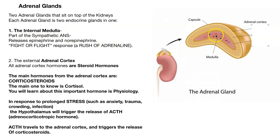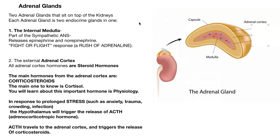The adrenal medulla is where the autonomic sympathetic nervous system goes in times of real stress and emergency. The sympathetic nervous system will release norepinephrine and epinephrine into the blood — these act like hormones. That norepinephrine and epinephrine goes throughout your whole body, triggering a rush of adrenaline. It's called adrenaline because it's coming from the adrenal gland, but basically it's epinephrine and norepinephrine.